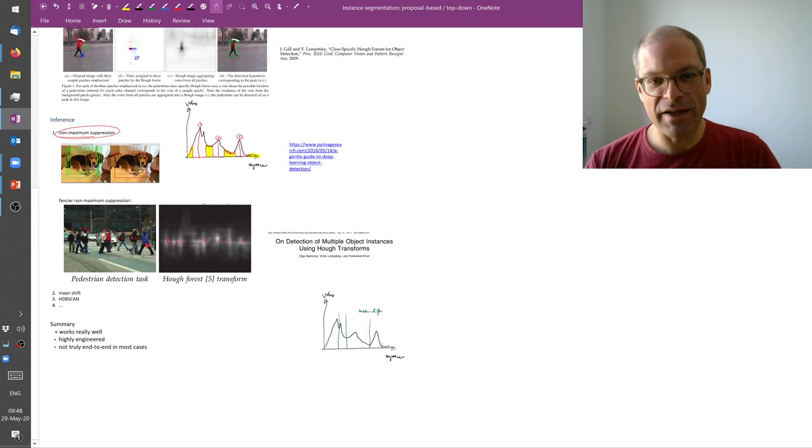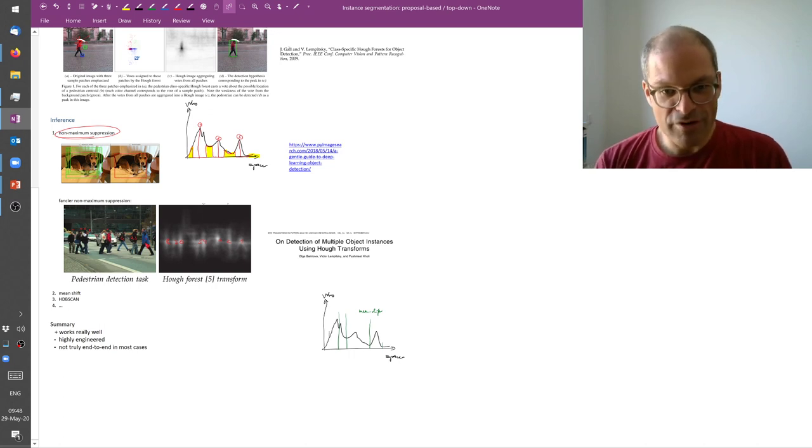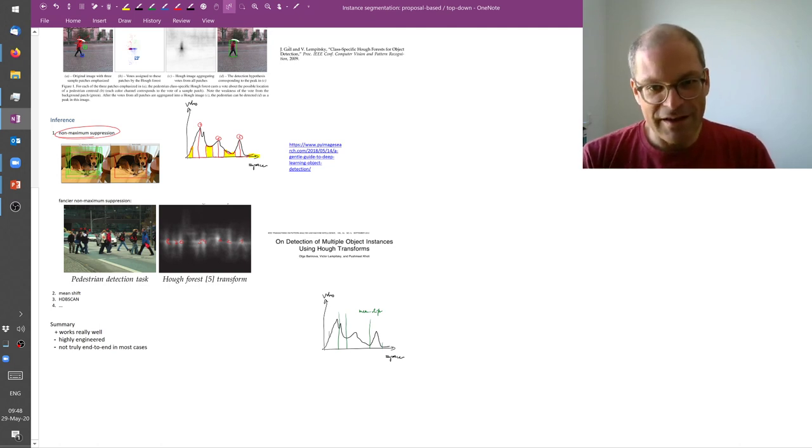So summary, these proposal-based or top-down methods they work really well. If you look at the winners of today's instance segmentation benchmarks, I would say there is a three-quarter chance that the number one is a proposal-based method. On the downside, these things are really highly engineered. To win a benchmark on natural images you always have to engineer, but to my mind these proposal-based methods necessitate even a bit more engineering than the alternative class I will present afterwards.